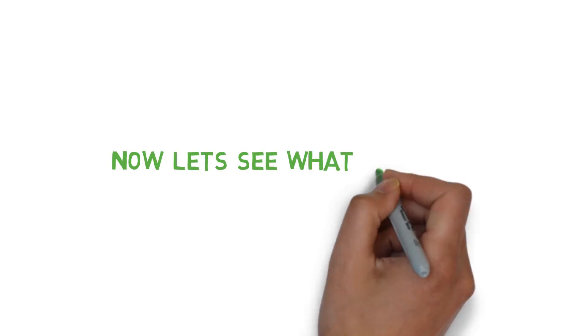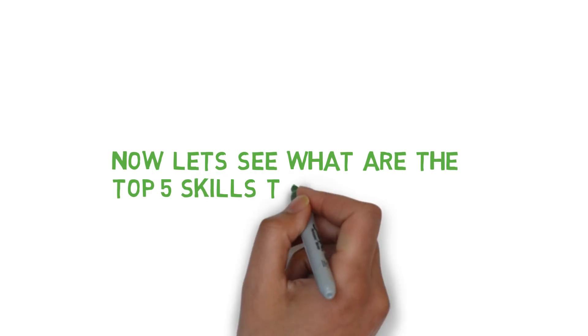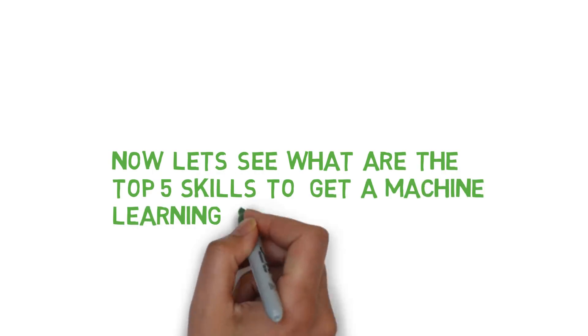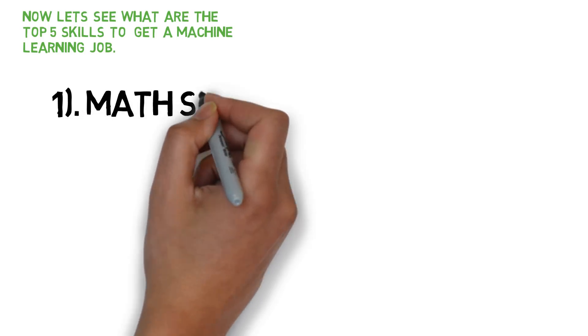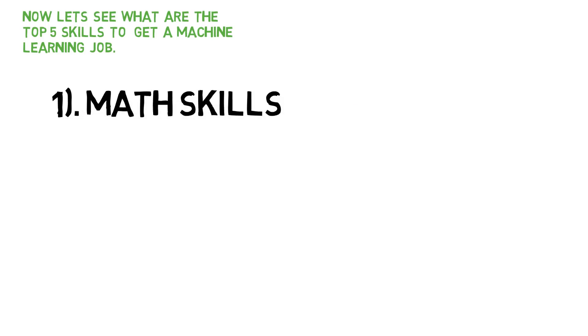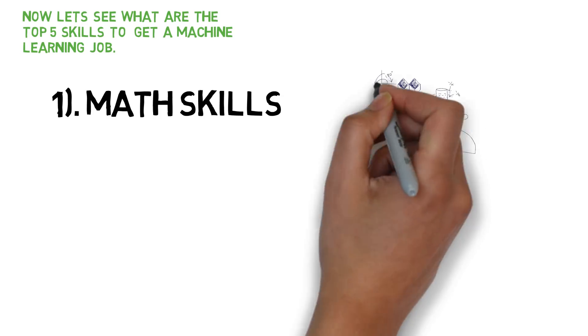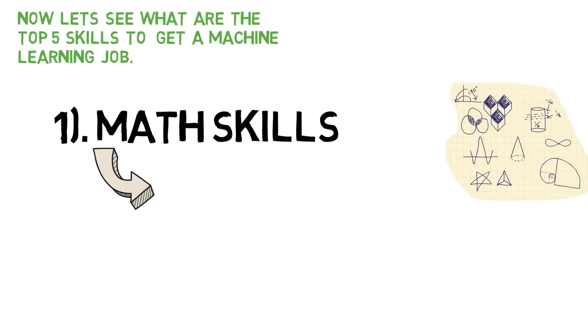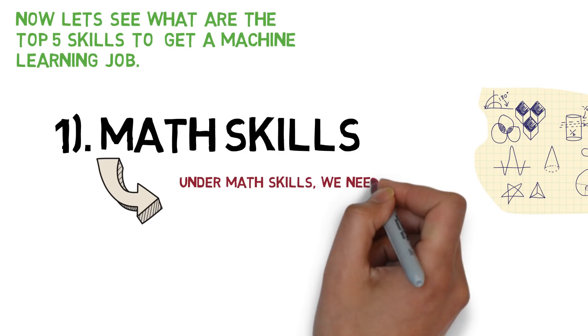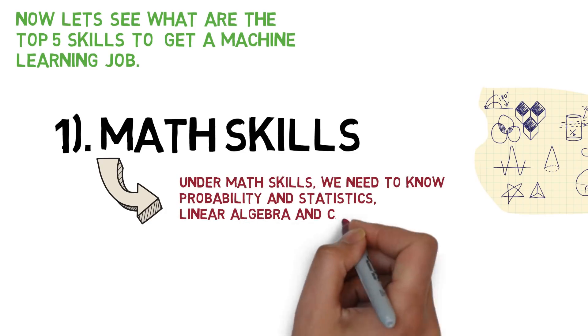Now let's see what are the top five skills to get a machine learning job. At number one, we have math skills. Under math skills, we need to know probability and statistics, linear algebra, and calculus.